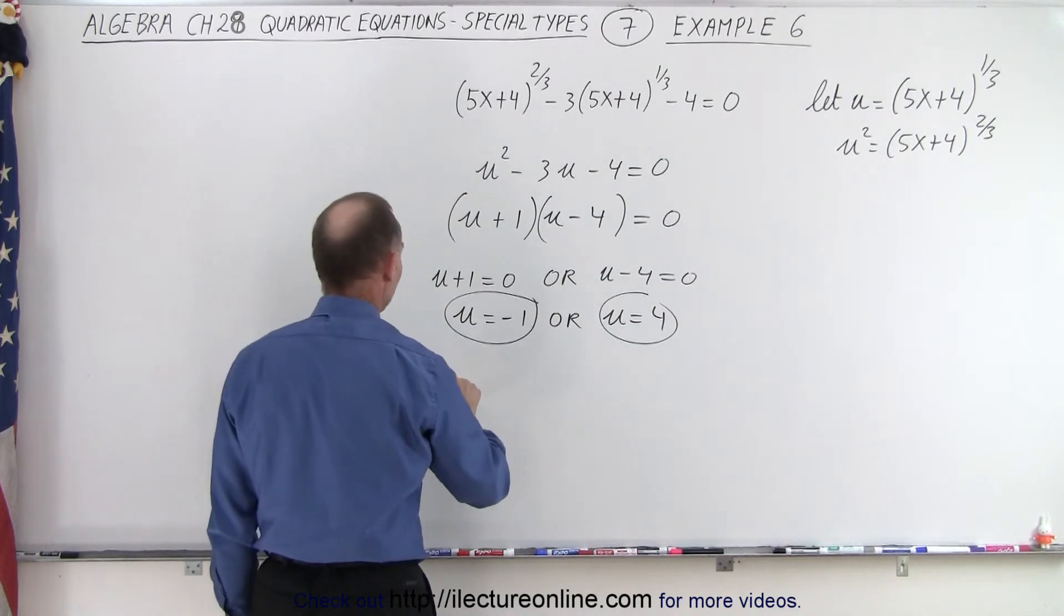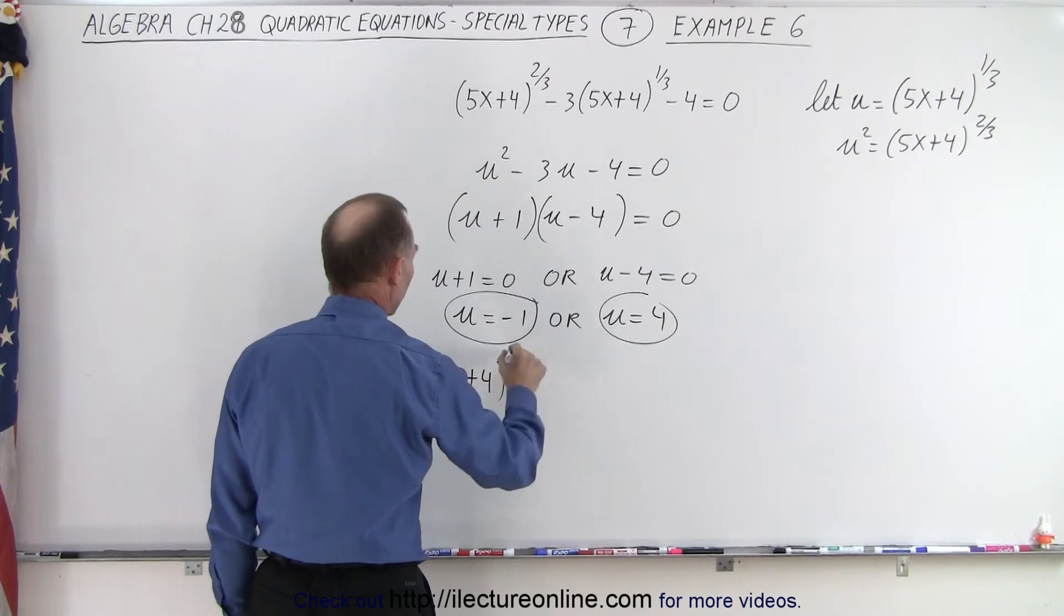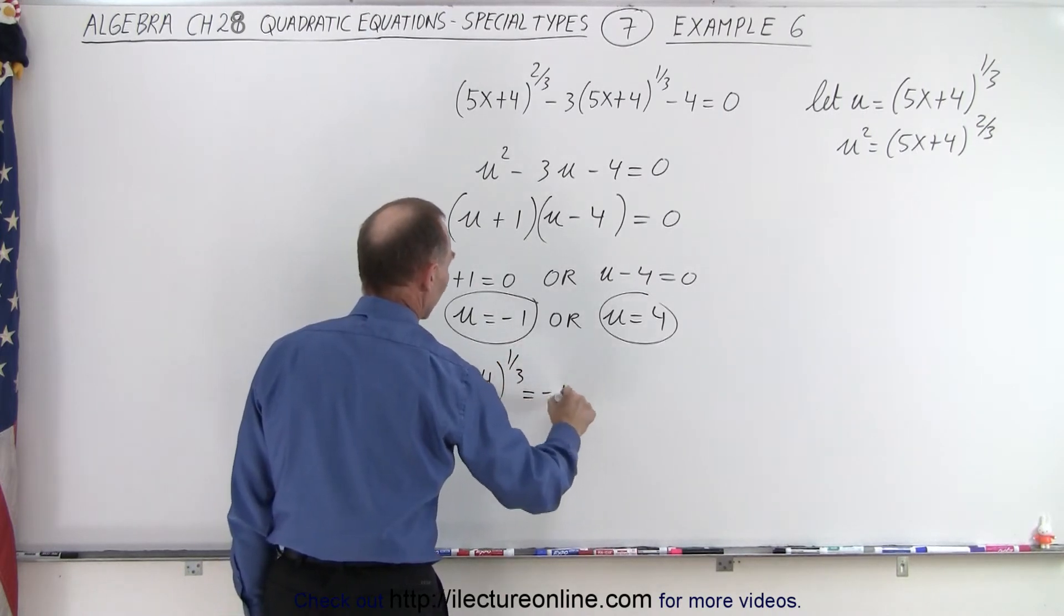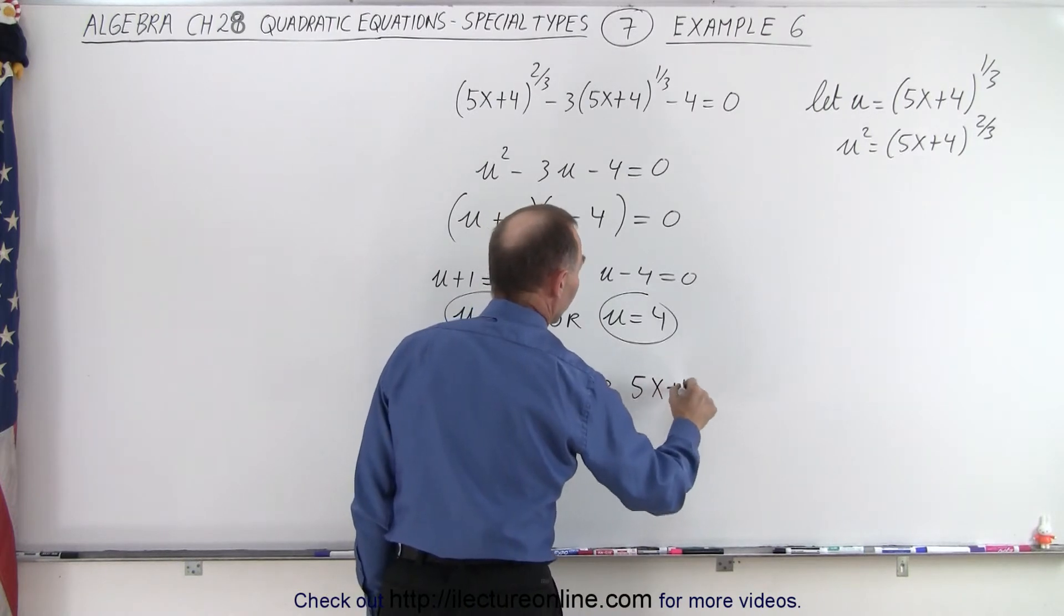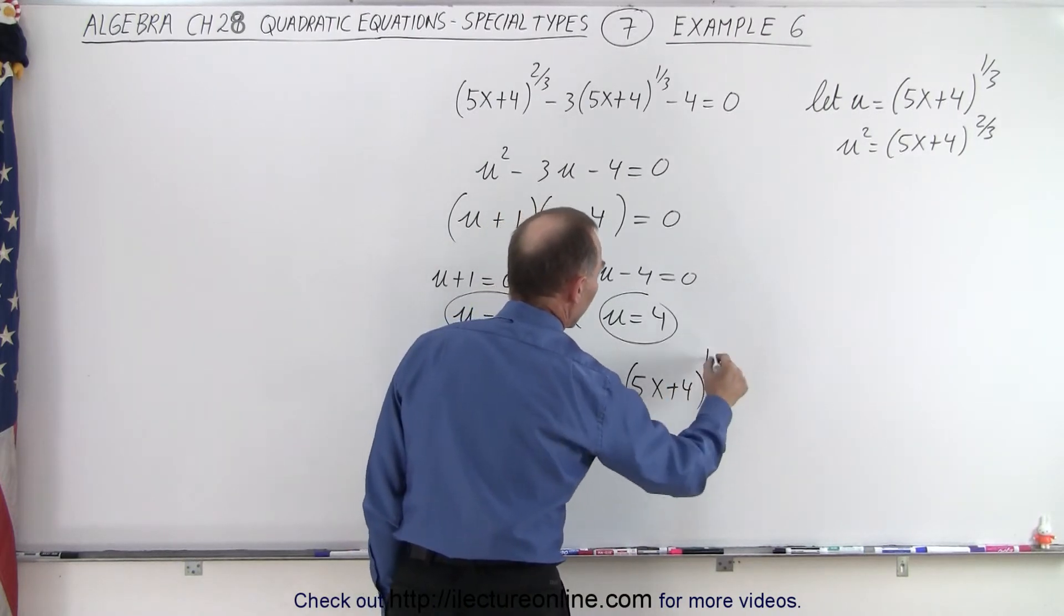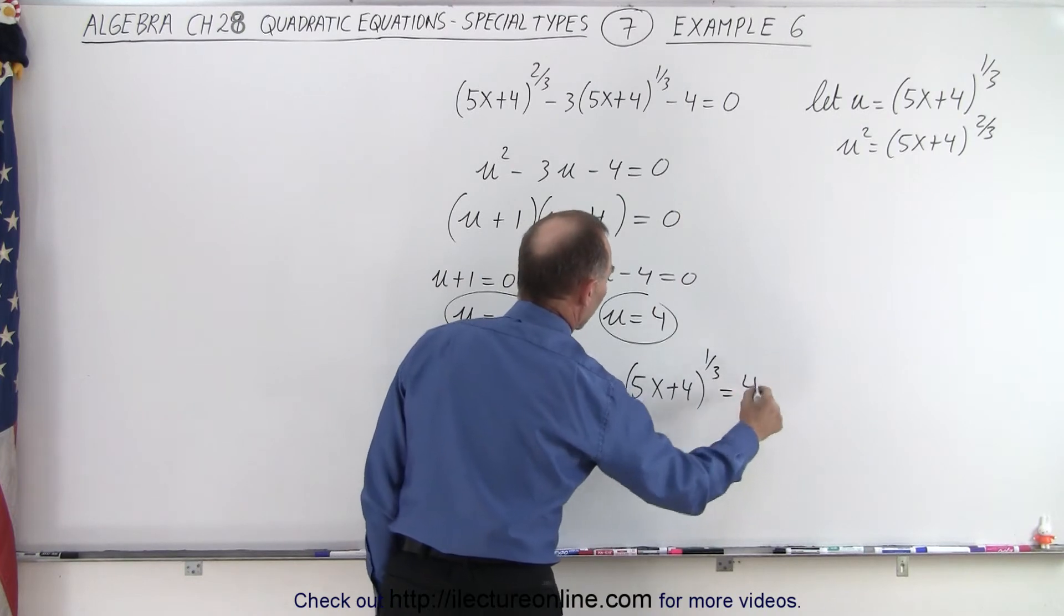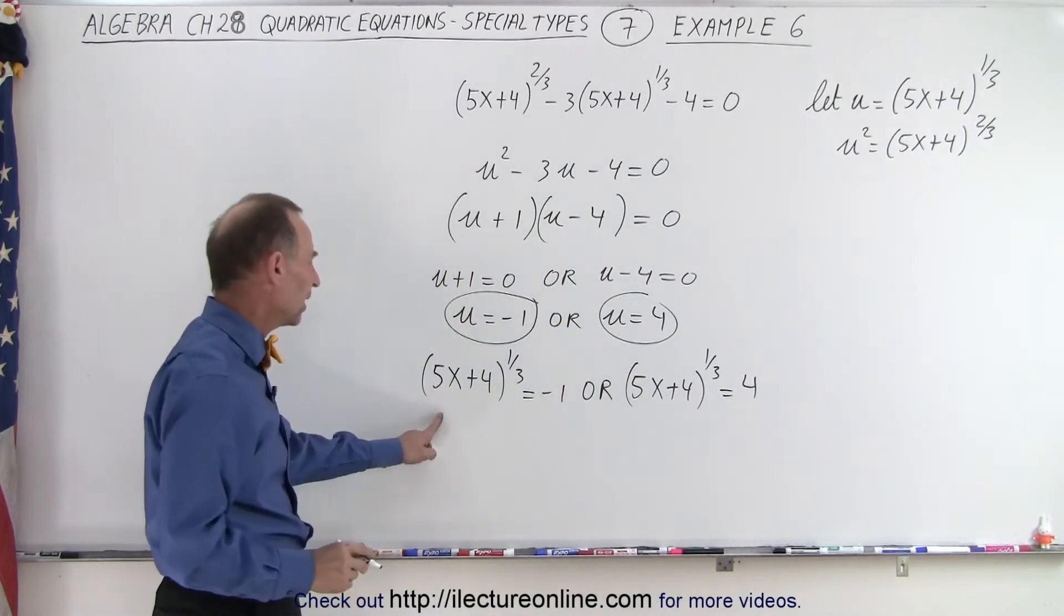That means that 5x plus 4 to the 1/3 power equals negative 1, or 5x plus 4 to the 1/3 power is equal to 4.